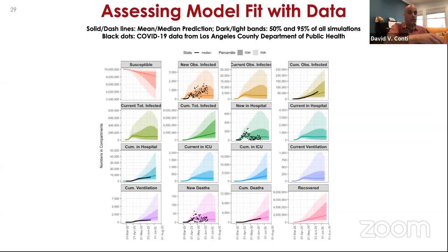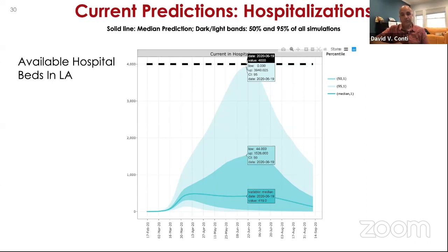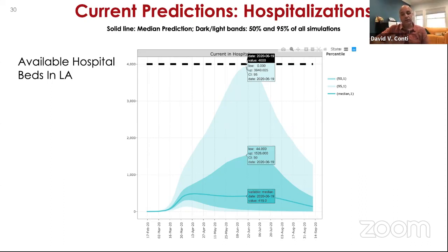A snapshot of current predicted hospitalizations is shown over time. On the website, you can hover over projections to get median estimates — for example, around June 19th, approximately 419 individuals are estimated to be in the hospital, with the 95th percentile reaching up to 3,900 — close to LA County hospital capacity. Estimating when capacity would be reached for hospital beds, ICU beds, and deaths was one of the main goals.